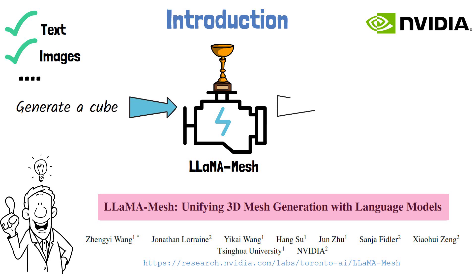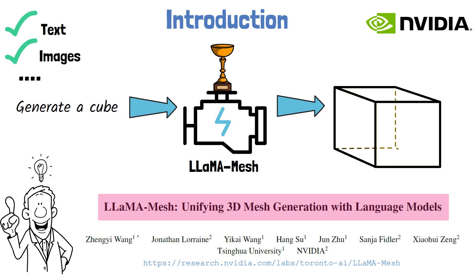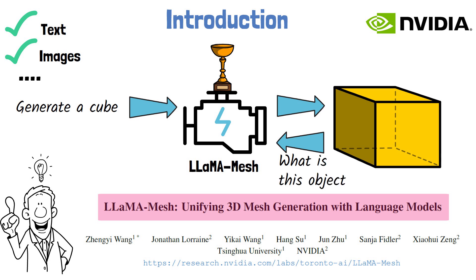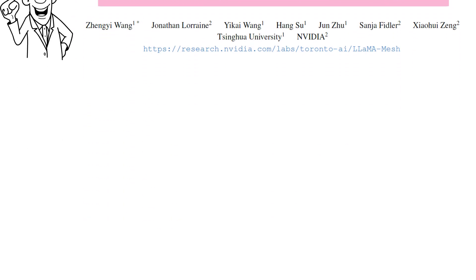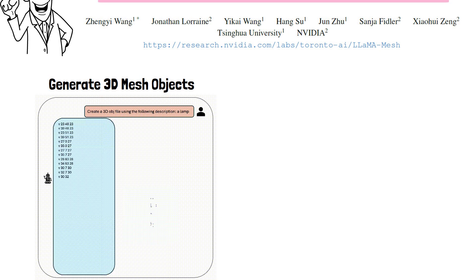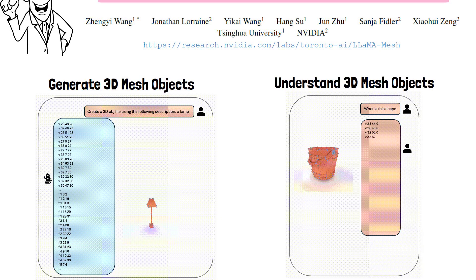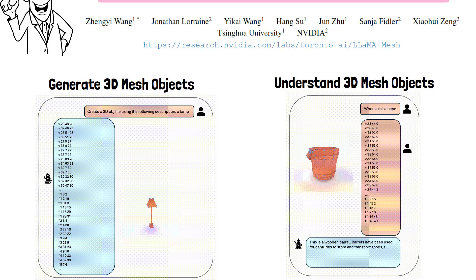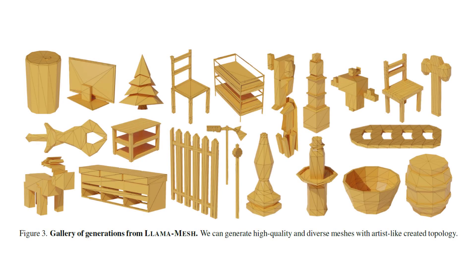Given a prompt, LLaMA Mesh can generate a 3D mesh object such as a cube, and it works the other way around as well. We can feed the language model with a cube, ask it what shape it is, and it can recognize and say it is a cube. We can see such examples in the demo taken from their GitHub page. On the left, the model is requested to generate a lamp, and on the right, the model is asked to recognize a shape, identifying it as a wooden barrel. In the paper, they also share a gallery of objects generated by LLaMA Mesh, which is quite impressive.